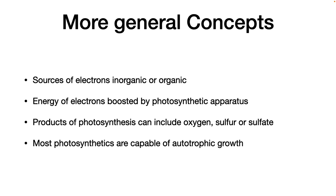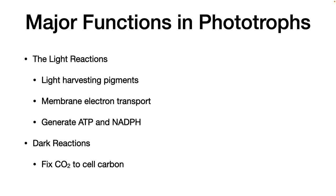Fifth, the photosynthetic apparatus uses light energy to boost the electron potential of the electrons. Sixth, the products of photosynthesis can be oxygen, sulfur, or sulfate. Finally, most photosynthetic microorganisms are capable of autotrophic growth. That is, the ability to synthesize all carbon compounds they need from carbon dioxide alone.